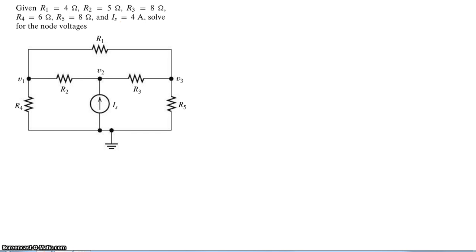In this example, we'll use node voltage analysis method to find the voltage at nodes V1, V2, and V3. In this resistive circuit, all the values of R1 through R5 are given, the current source is also given, and the reference node has been chosen at the bottom end of the current source.